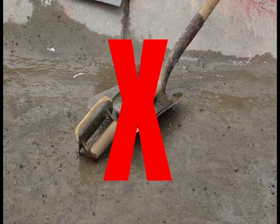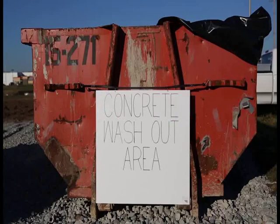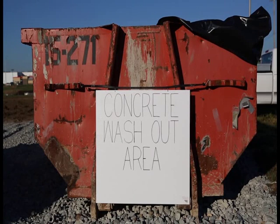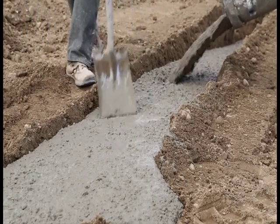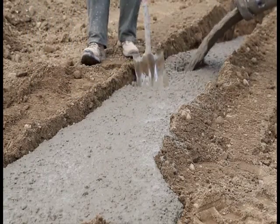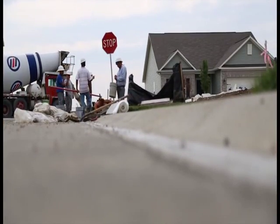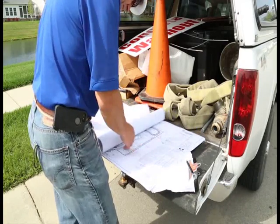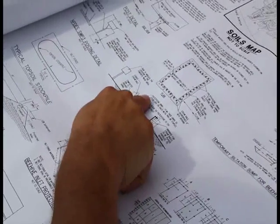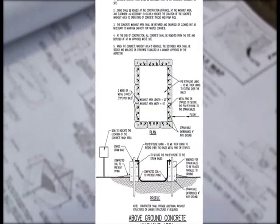No one on the worksite has the authority to allow or instruct you to wash out anywhere other than an approved, properly maintained washout location, or by appropriate recycling methods. Every concrete delivery will fall under some kind of regulations and will need to follow some basic rules. Larger construction sites are required to have a written plan called a stormwater pollution prevention plan that specifically calls out methods and practices to prevent stormwater pollution from construction activities.